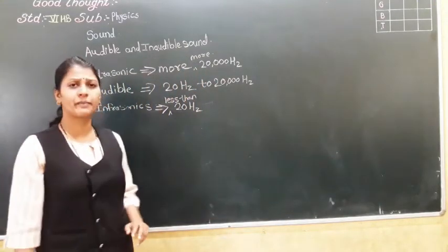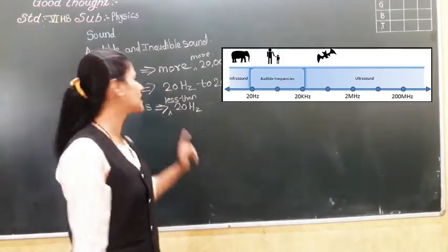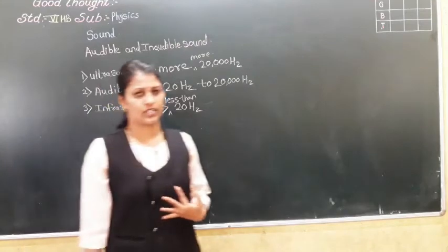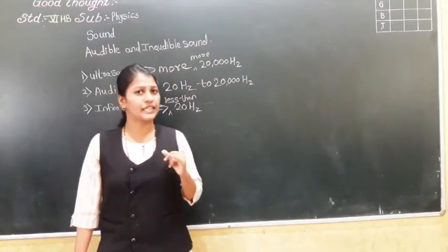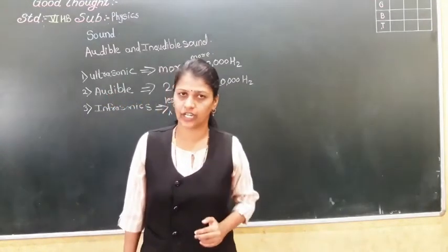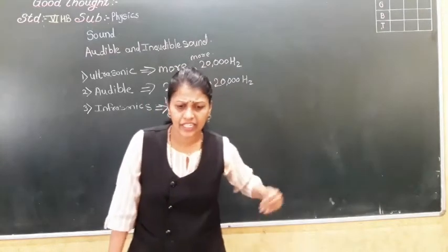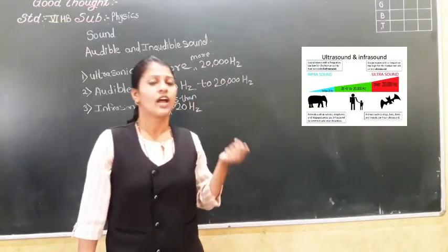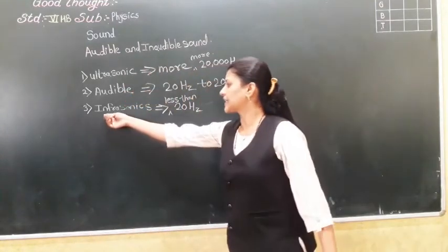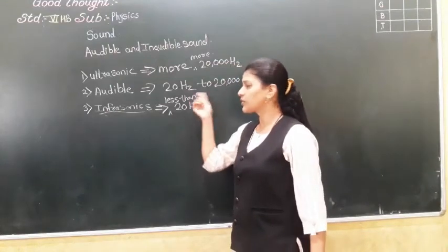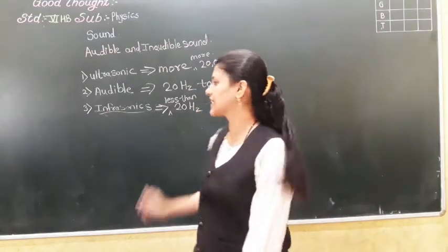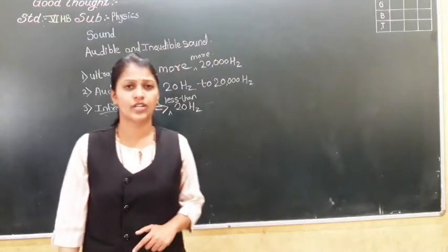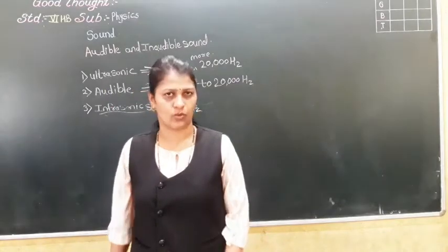The human hearing range is 20 hertz to 20,000 hertz. Now, infrasonic — there are things like earthquake and volcano whose sound is very low. Animals like elephant and whale can hear less than 20 hertz sound — that is called infrasonic sound.